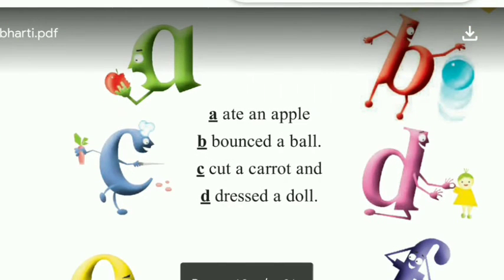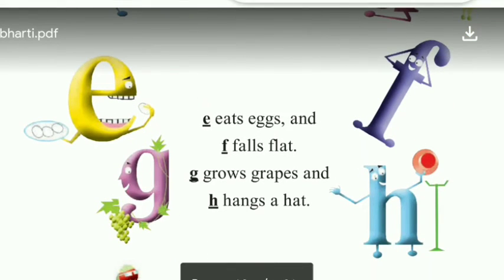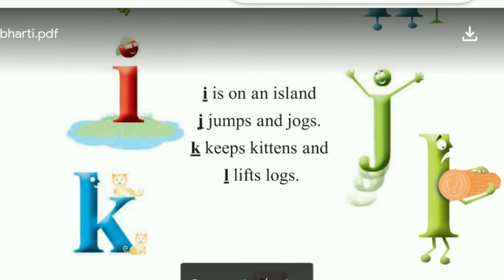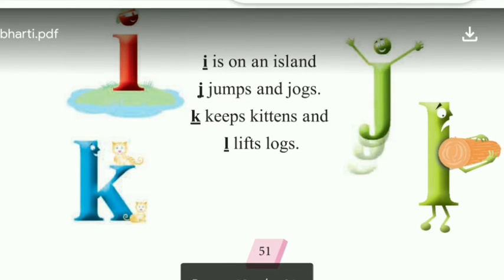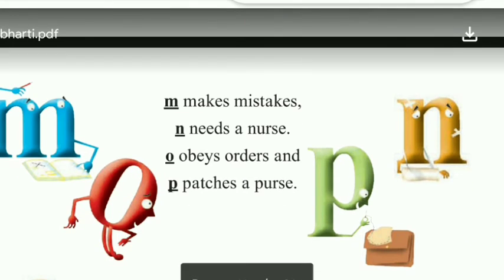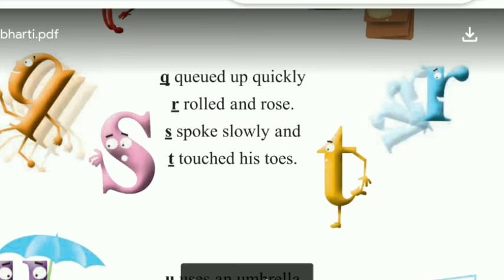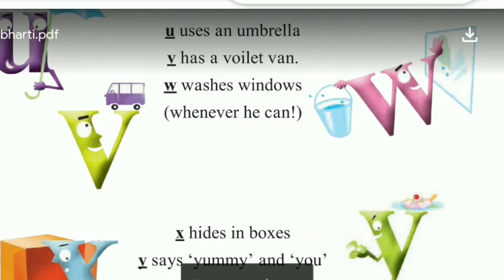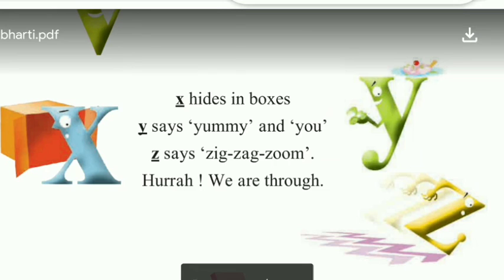A ate an apple, B bounced a ball, C cut a carrot and D dressed a doll. E eats eggs and F falls flat. G grows grapes and H hangs a hat. I is on an island, J jumps and jogs, K keeps kittens and L lifts logs. M makes mistakes and N needs a nurse. O obeys orders and P patches a purse. Q queues up quickly, R rolls a rose. S speaks slowly and T touches toes. U uses an umbrella, V has a violet van, W washes windows whenever he can. X hides in boxes, Y says yummy and you, Z says zig-zag-zoom. Hurray, we are through.